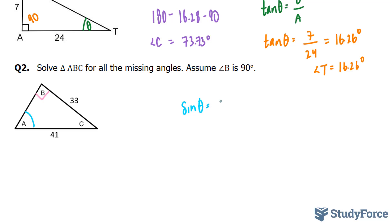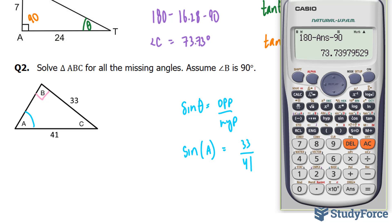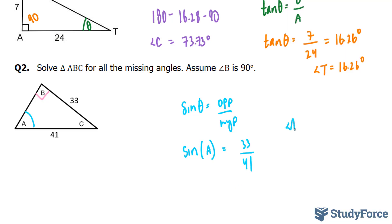Sine theta is equal to opposite over the hypotenuse. So we don't know our angle, sine, and you can replace theta with big A if you like. It really doesn't matter. The opposite is 33. The hypotenuse is 41. I'm going to use sine inverse to find out what my angle is. So shift, sine, you should end up with a symbol that looks like that. 33 divided by 41 gives me 53.59. So angle A is equal to 53.59 degrees.